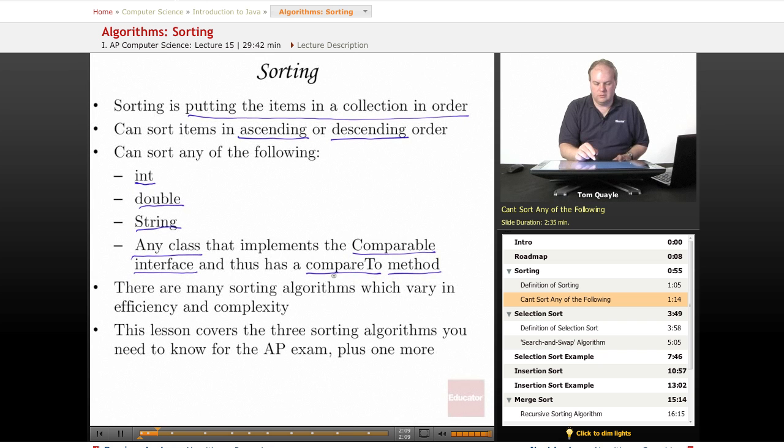If compareTo returns a value greater than zero, it indicates that the second string sorts after the first string in the sort sequence. And if it returns exactly zero, it means that the two strings are identical and they would have exactly the same position in the sort sequence.